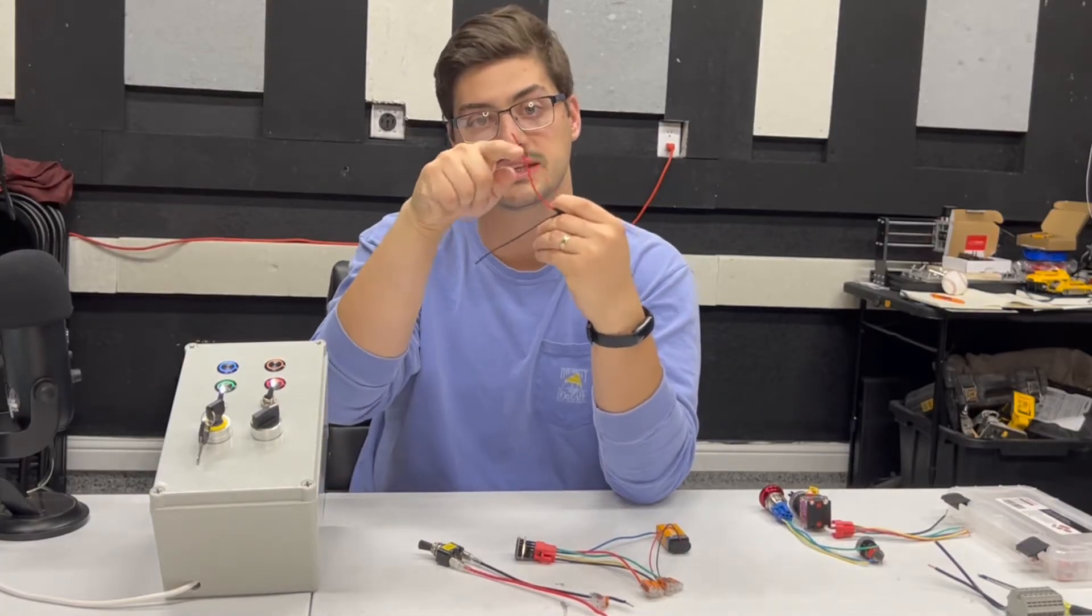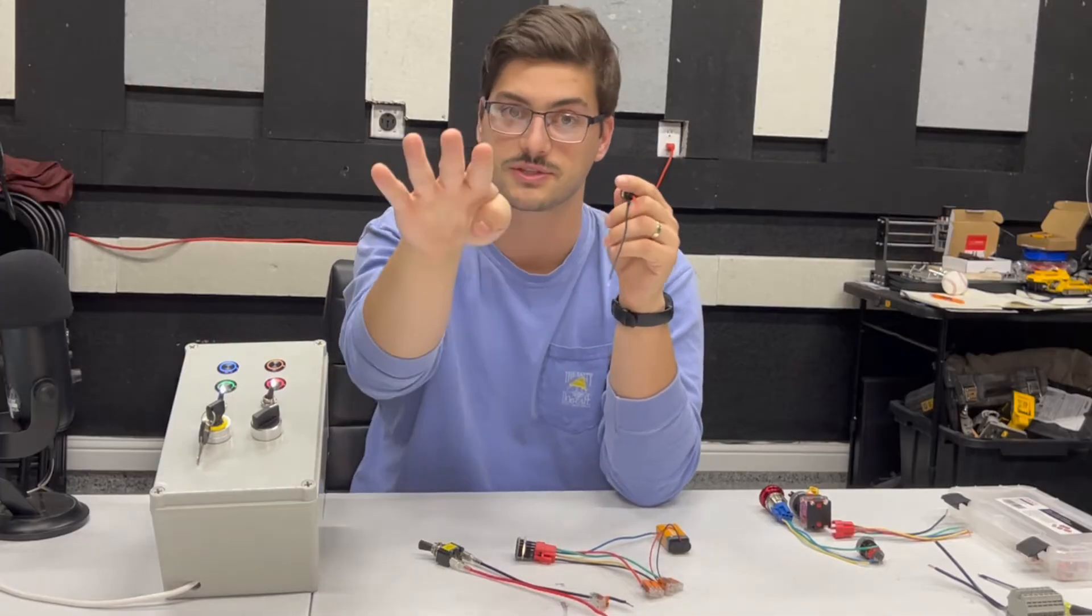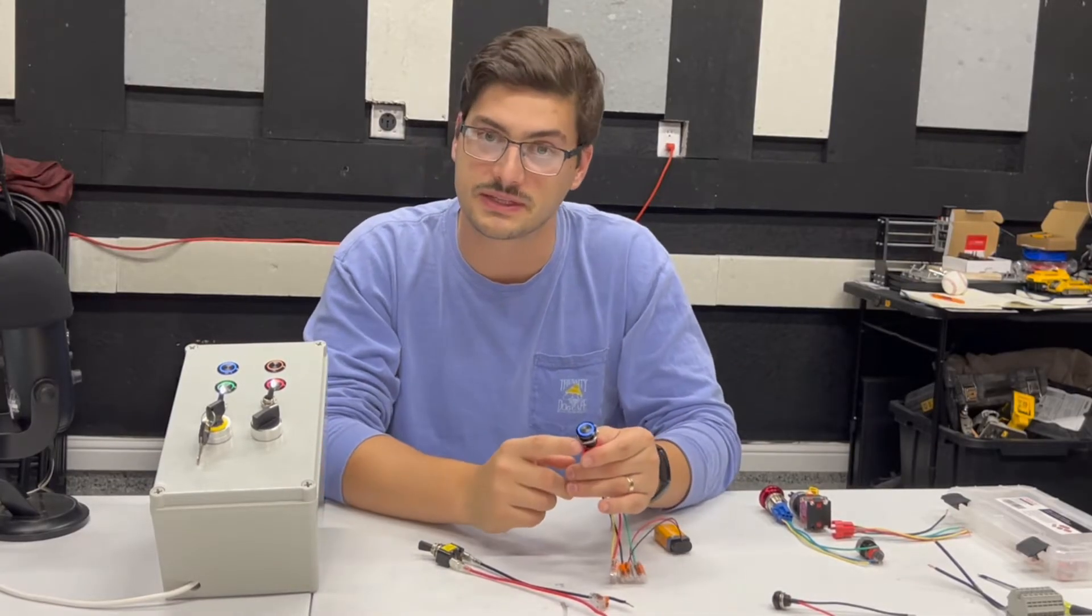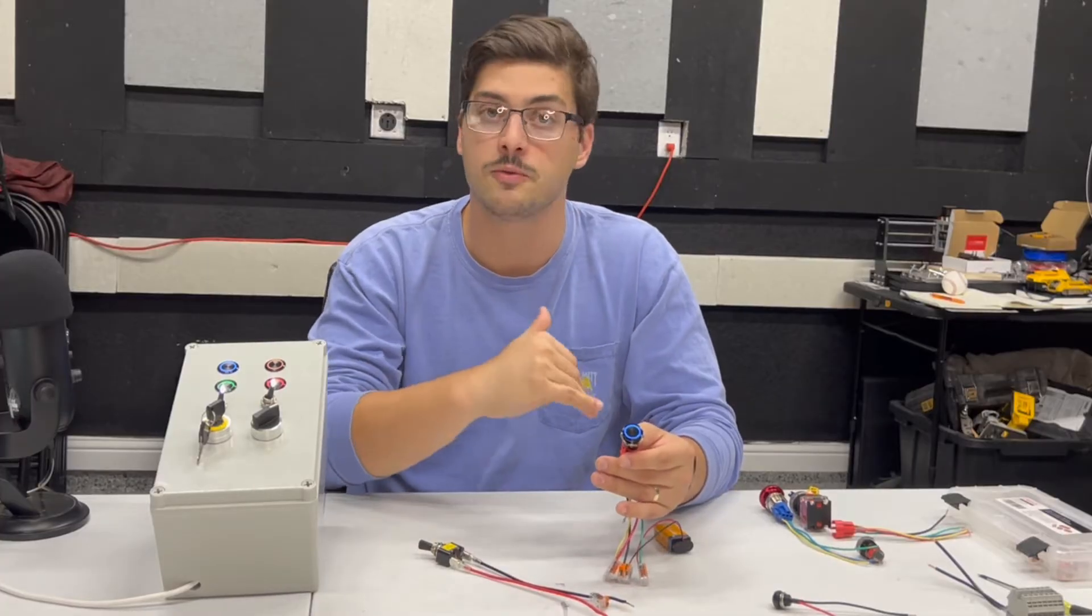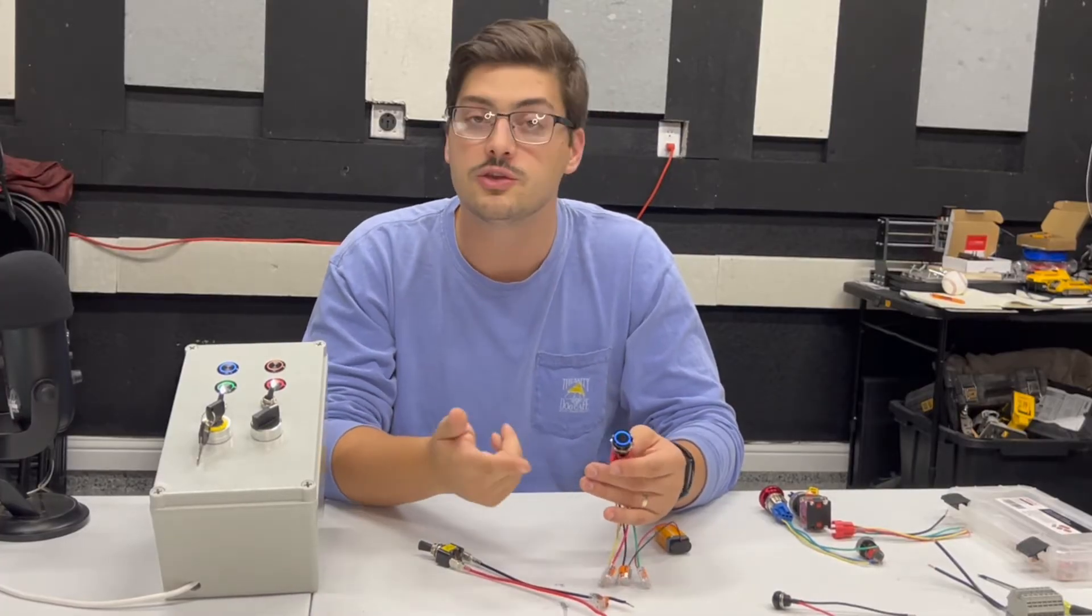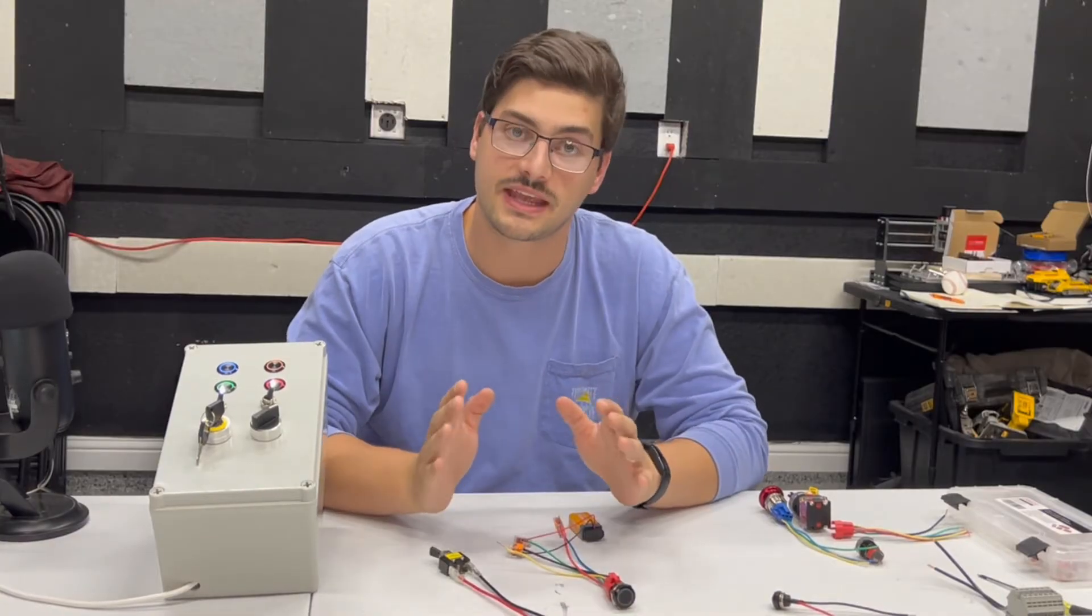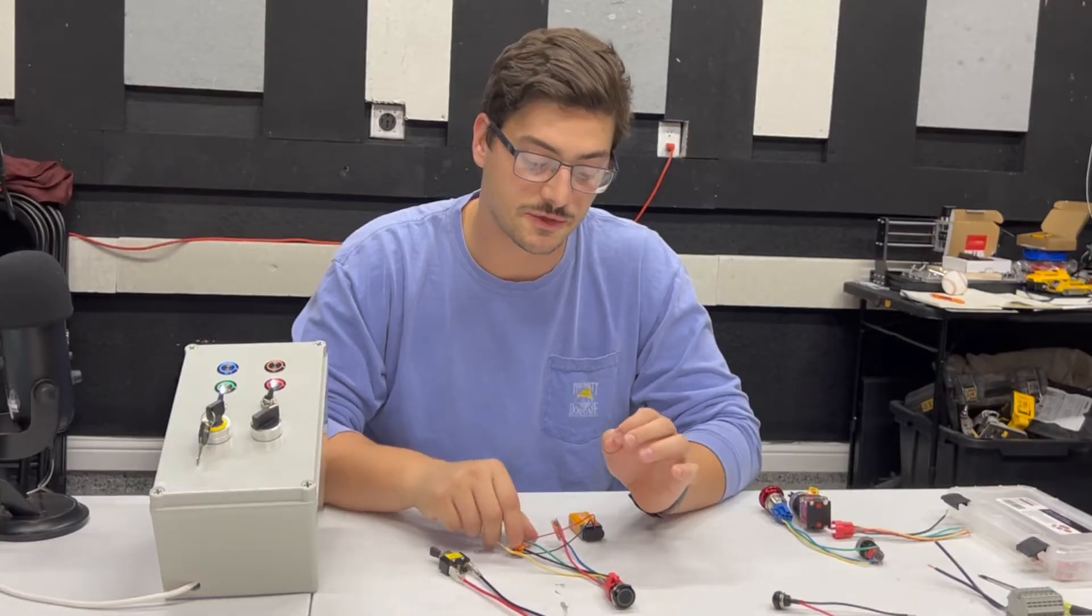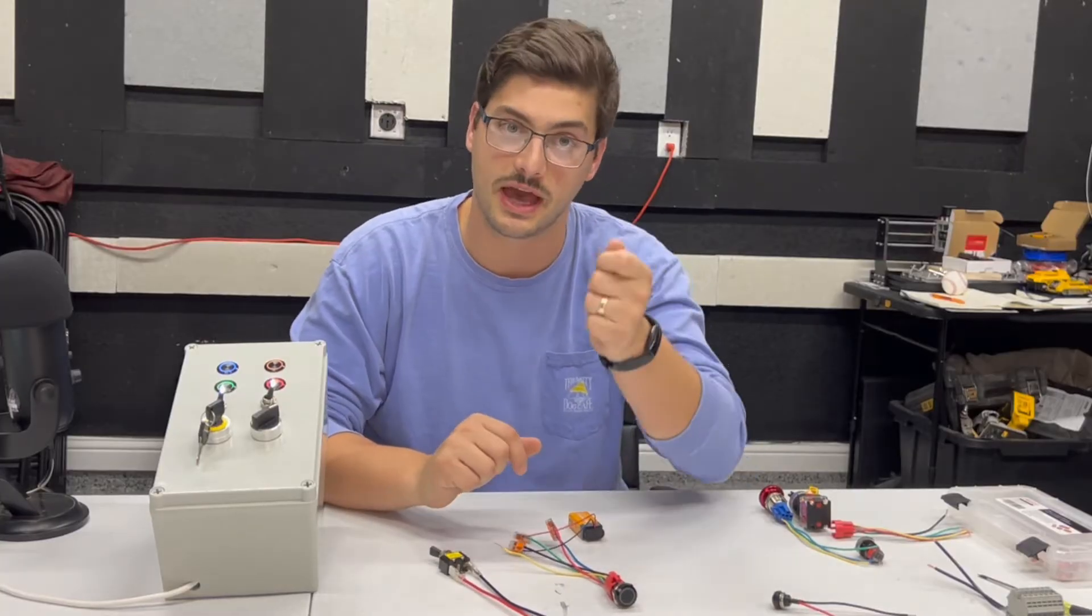When you push the button in, power flows into the second wire and goes downstream. When you have a slightly more advanced button that has things like a built-in LED or a normally open and normally closed wire, you can do a lot more functionality with it. To understand the concept of normally open and normally closed, it's useful to start from the concept of common.